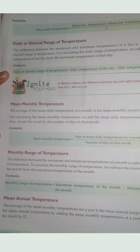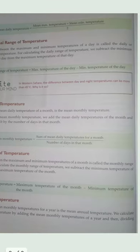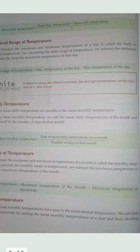The monthly range of temperature is the difference between the maximum and minimum temperatures of a month — it is called the monthly range of temperature. The mean annual temperature is the average of the mean monthly temperatures for a year. We calculate it by adding the mean monthly temperatures and dividing by 12.